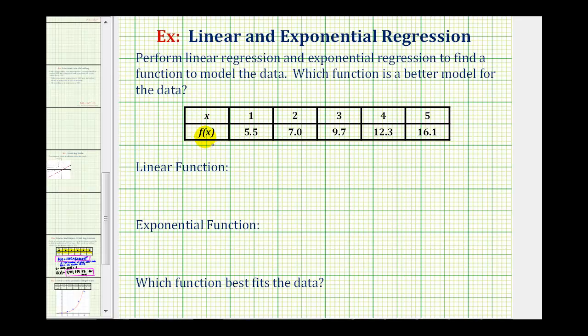So our linear function will be f(x) = 2.65x + 2.17, and the r-squared value is approximately equal to 0.9785.